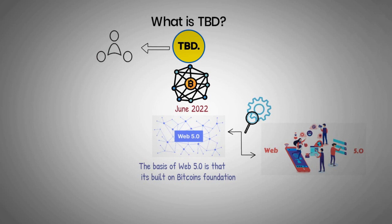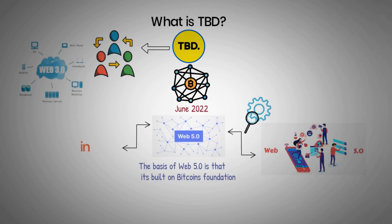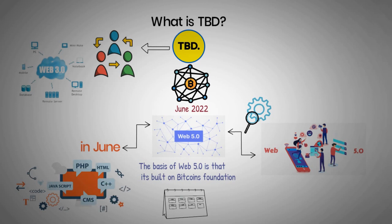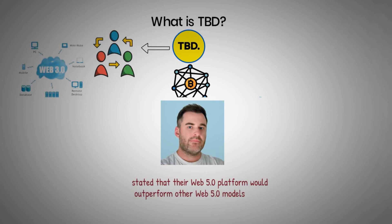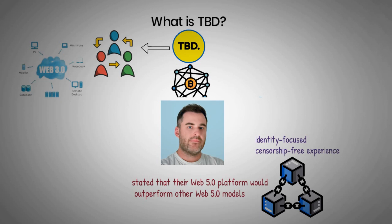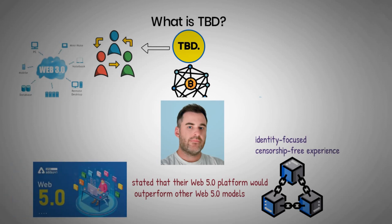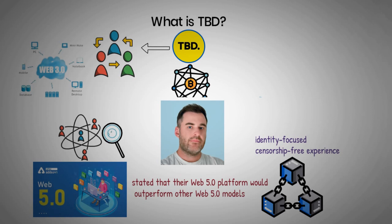TBD believes that third parties currently own identity and personal data, and this ownership has only shifted to Web 3.0. Although the Web 5.0 project was officially announced in June, it's still under open-source development, which means there hasn't yet been a release date. The leader of TBD, Mike Brock, stated that their Web 5.0 platform would outperform other Web 5.0 models. He stated that they use blockchain to develop an identity-focused, censorship-free experience. However, the team anticipates that development will be complex due to the need to abandon many assumptions about what a decentralized internet means.